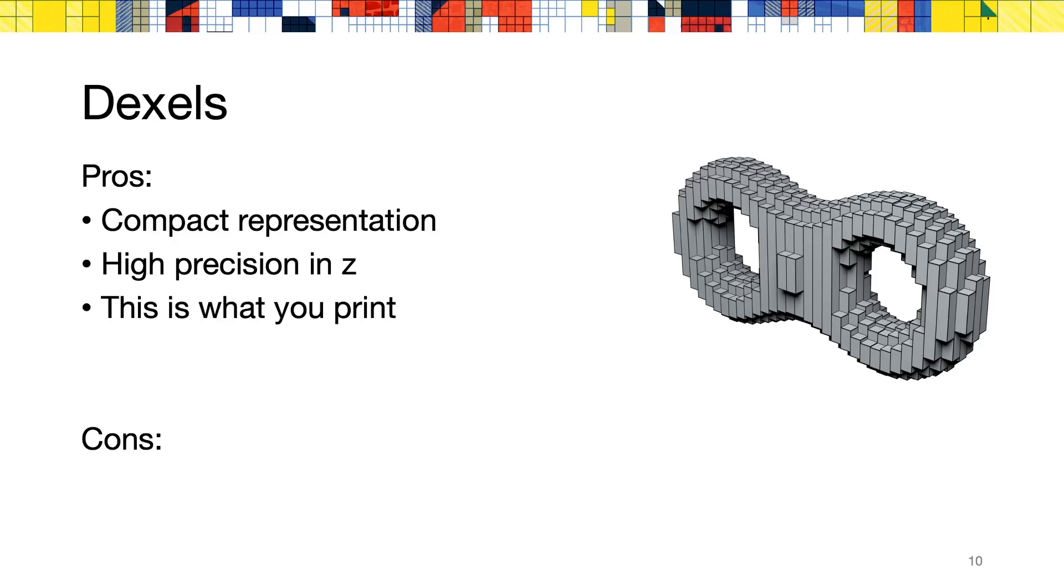Another essential point here is that this is the discretization that corresponds exactly to what you send to the printer, which leads to a more faithful representation of the printed volume. And finally, this data structure leads to several efficient algorithms, for example for the detection of support points.